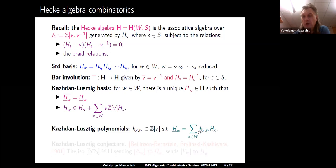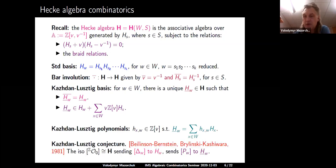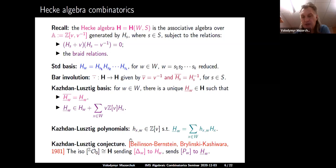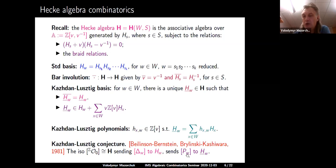The coefficients in the transition matrix from the standard basis to the Kazhdan-Lusztig basis are called Kazhdan-Lusztig polynomials. Their relevance to Category O is given by the Kazhdan-Lusztig conjecture, proved by Beilinson-Bernstein and Brylinski-Kashiwara in the early 1980s. There is a canonical isomorphism from the graded Grothendieck group of O₀ with the Hecke algebra, sending the class of Δ_w to H_w, and sending the class of the indecomposable projective cover of L_w to the Kazhdan-Lusztig basis element.